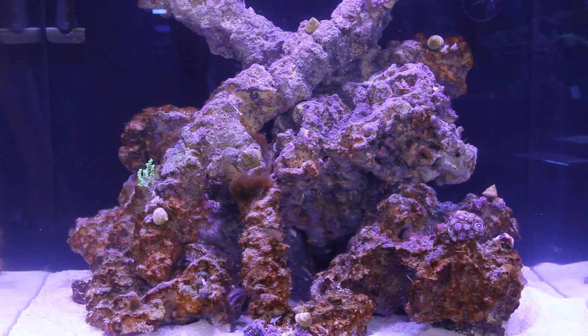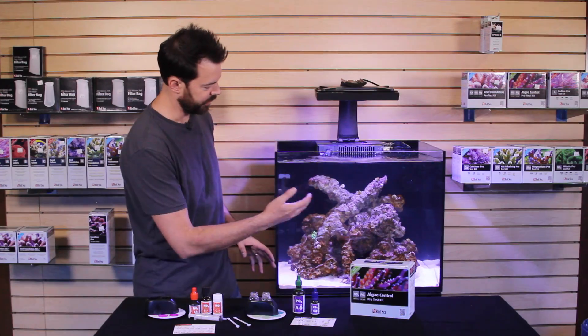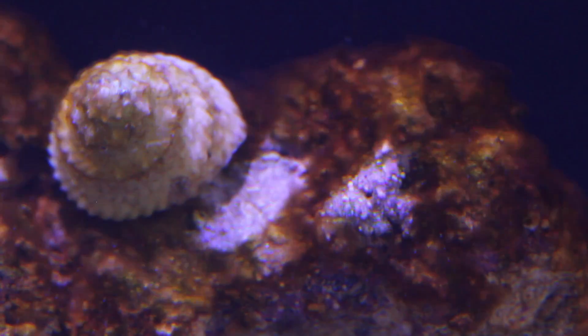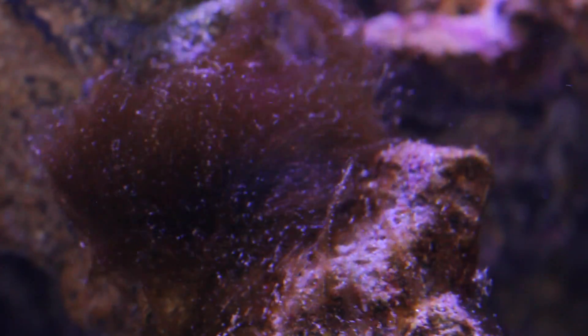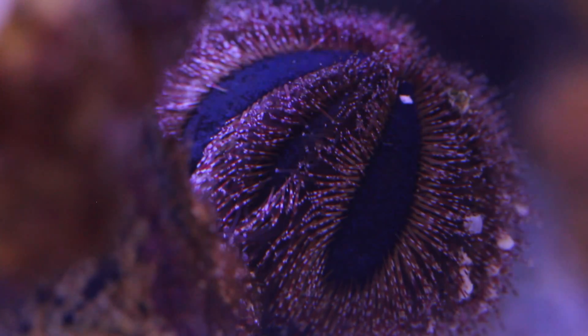As you can see in our tank we have a lot of algae still hanging out lower down in the aquarium. The snails have done a great job cleaning the upper rocks but they still have work to do. We did add some additional snails as well as a blue tuxedo urchin into the tank to help accelerate the process of cleaning these rocks up.